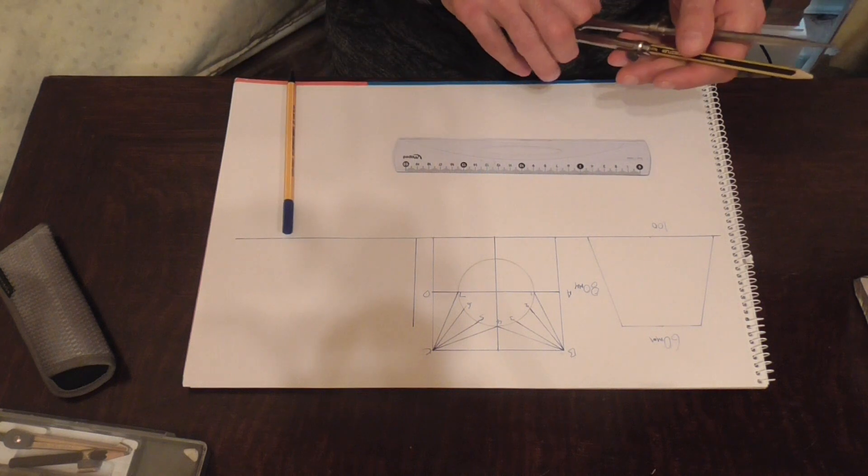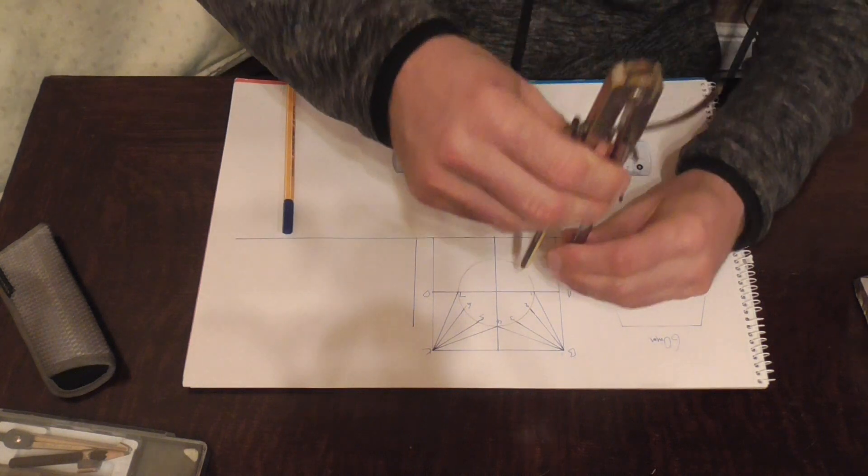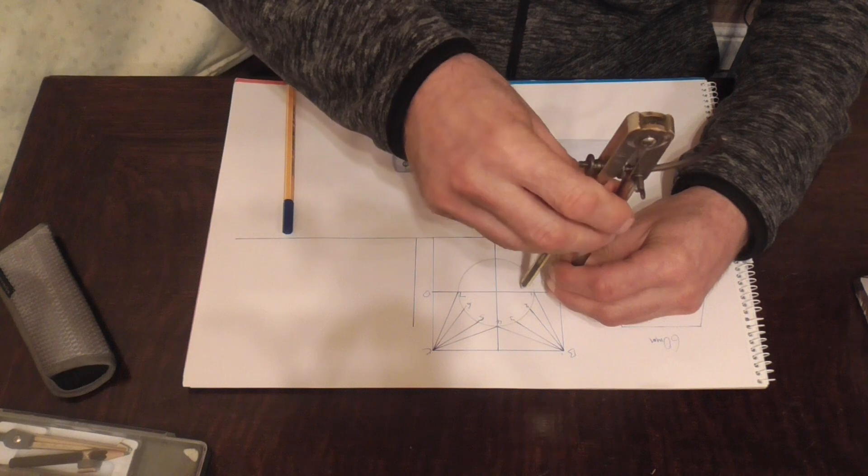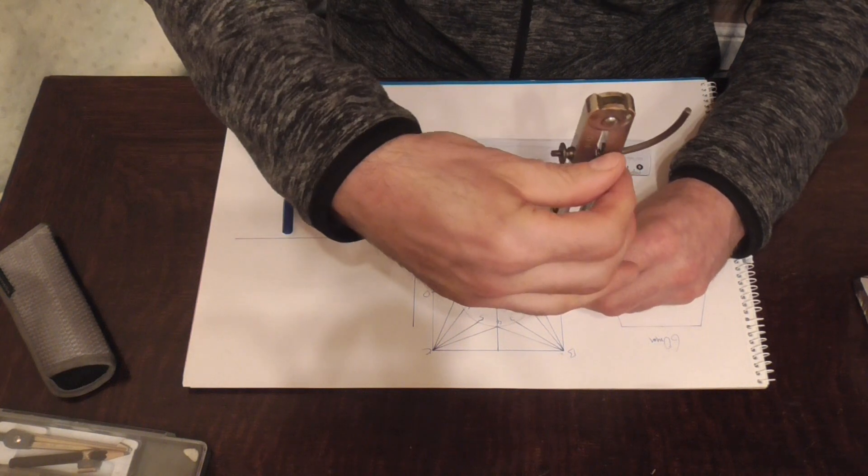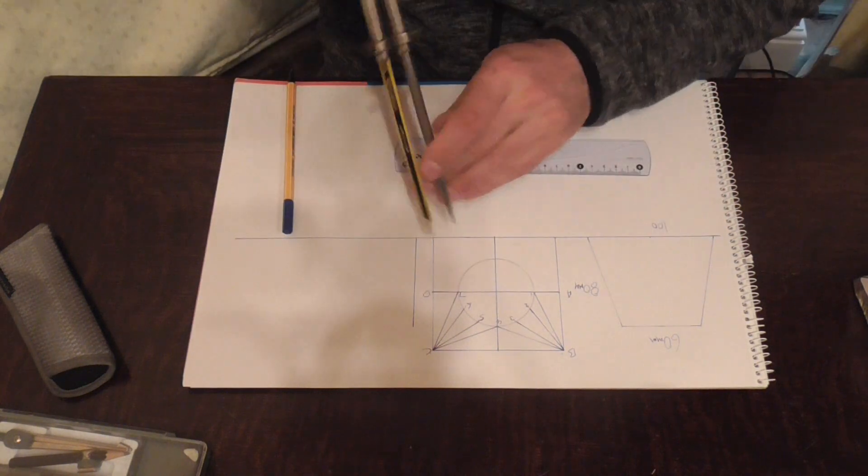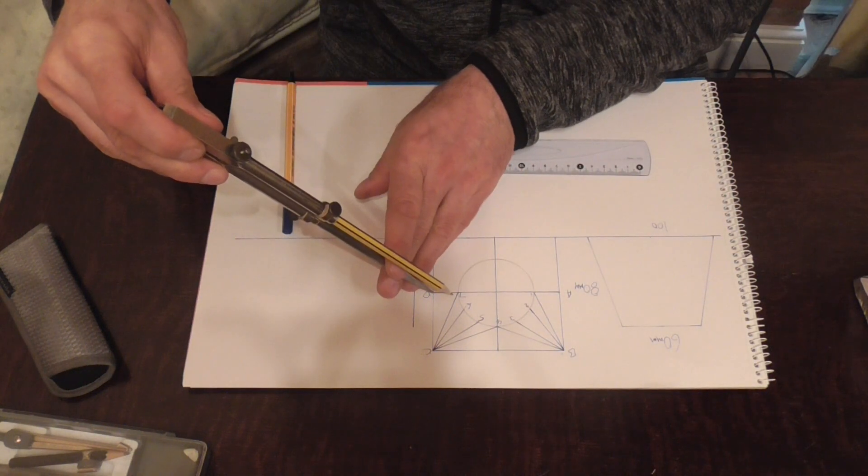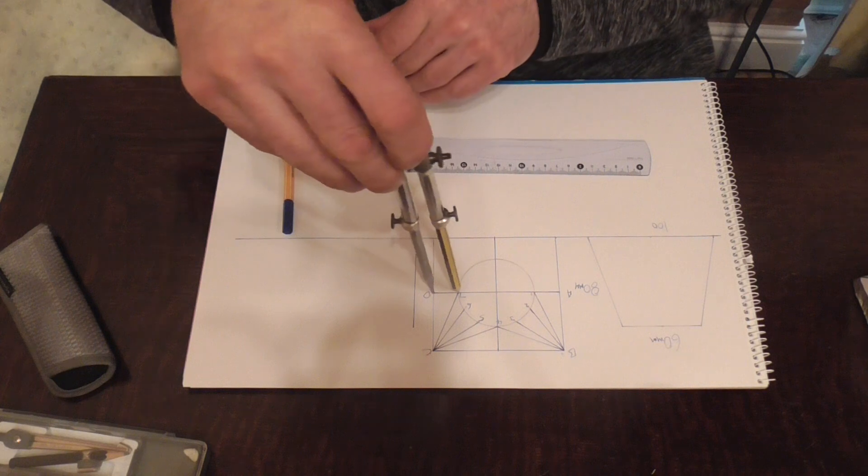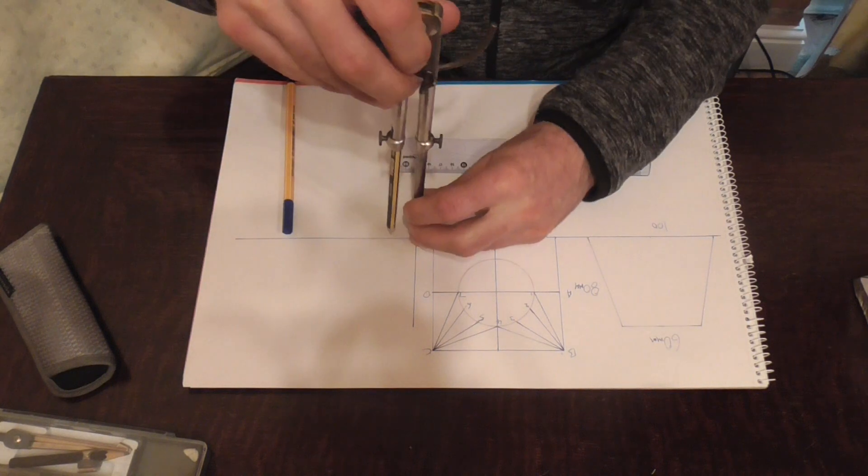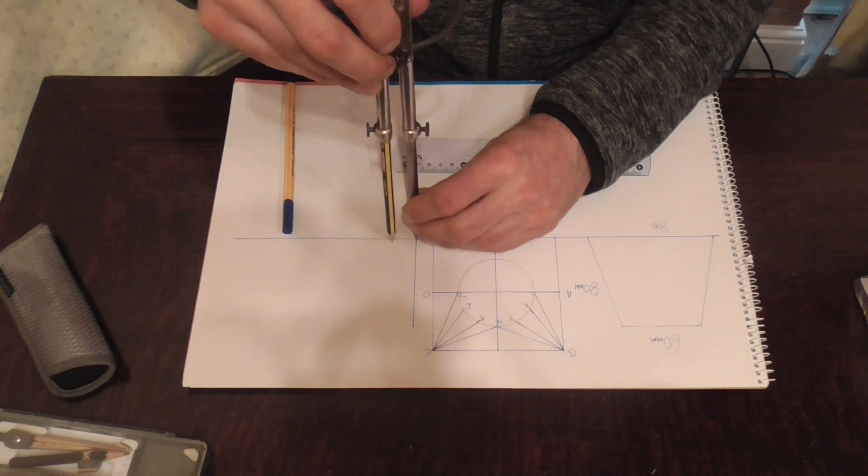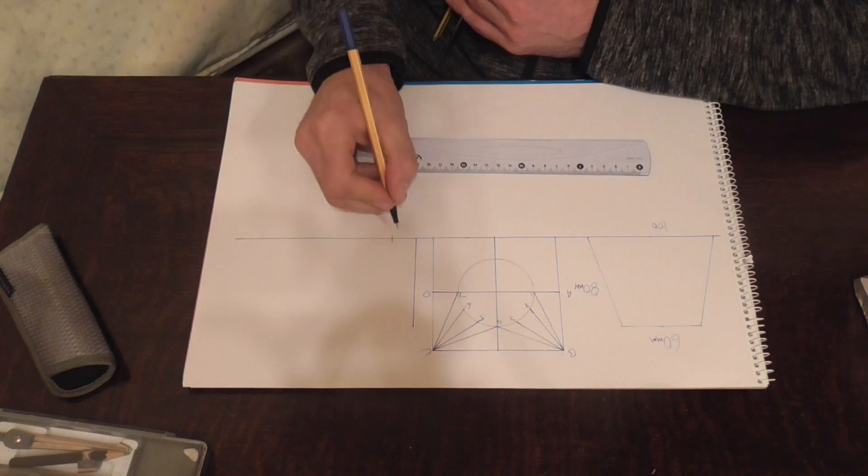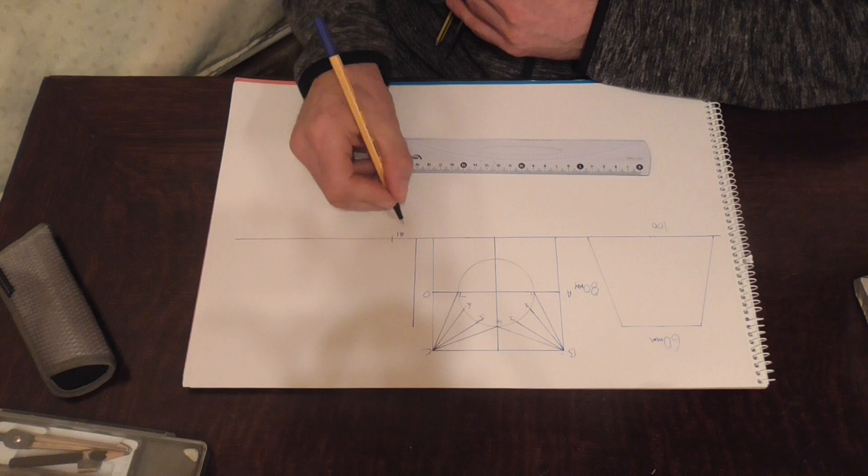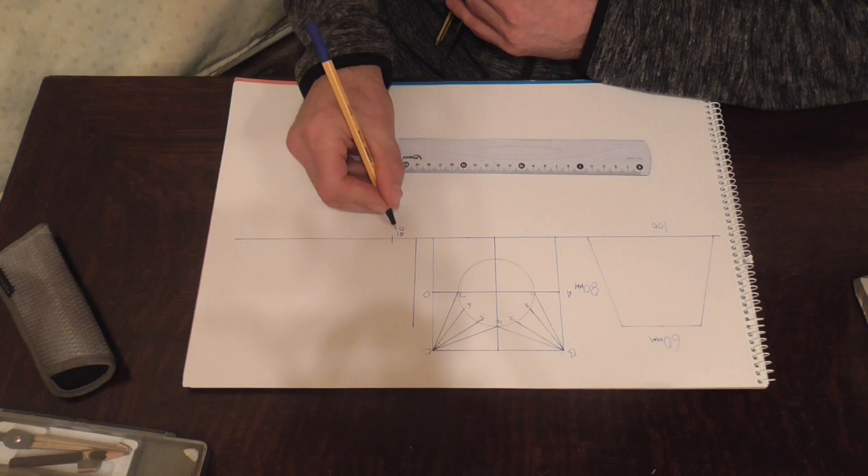And then we open our dividers up to A1. A1 and D7 are the same because it's a symmetrical shape. We'll just put a scratch in there and we label that A1 and D7.